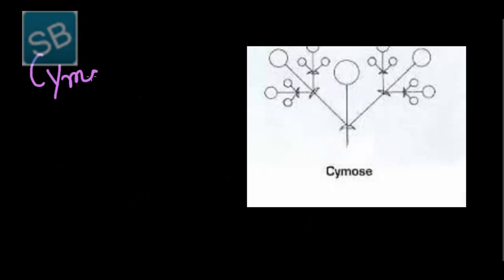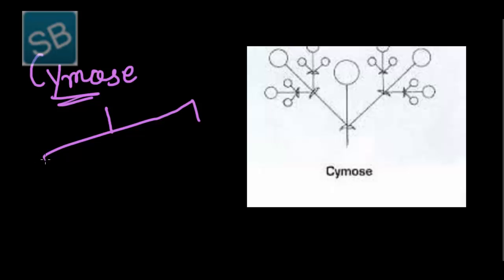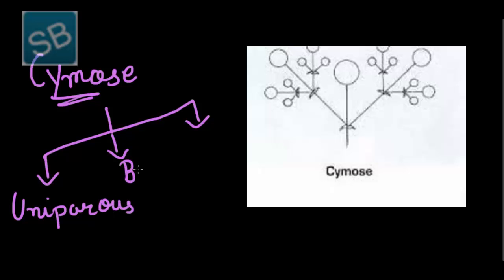The next type of branching is cymose. Here the apical bud of the stem becomes inactive after some time. As a result, branches can be produced from the axil of the leaf under it. As a result, branching stops after some time. The branching formed in this way is known as cymose branching. Cymose is further divided into three types: uniparous, biparous, and multiparous.